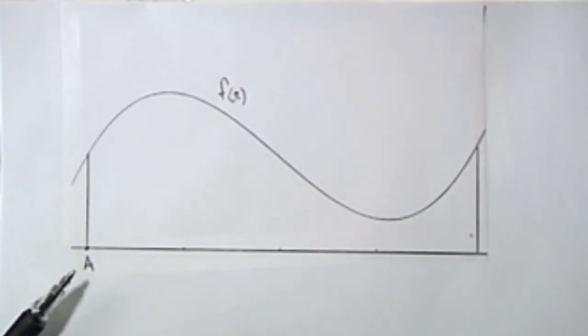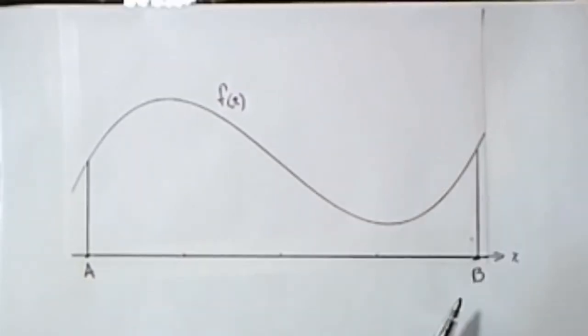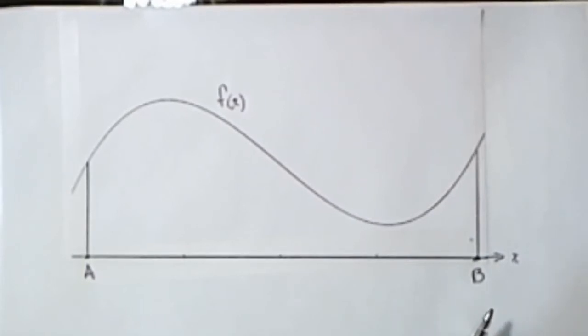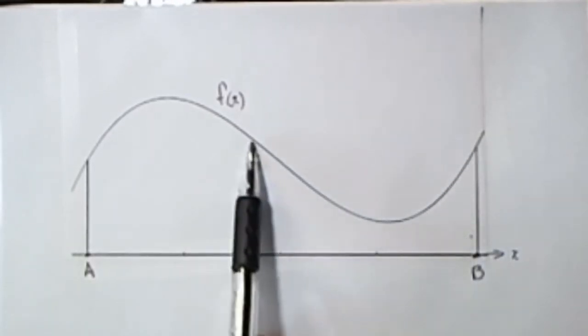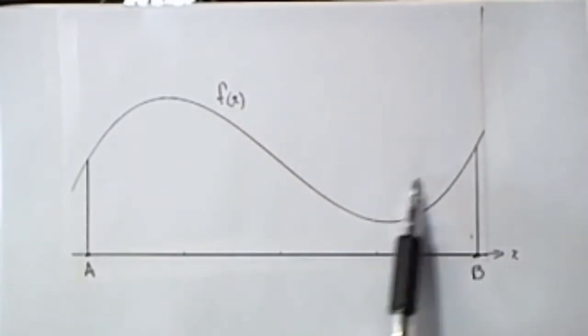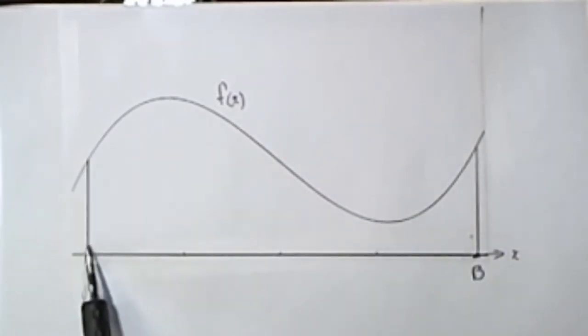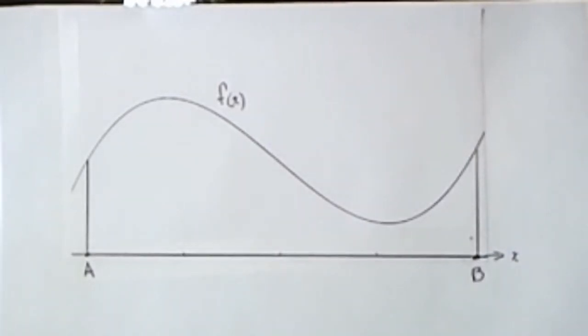Suppose that this is a point on the x-axis and that this is another point on the x-axis. Then finding the area under the curve means that we're looking for the area between a and b that's bounded above by the function, by the x-axis here, and by a and b on the left and right sides.